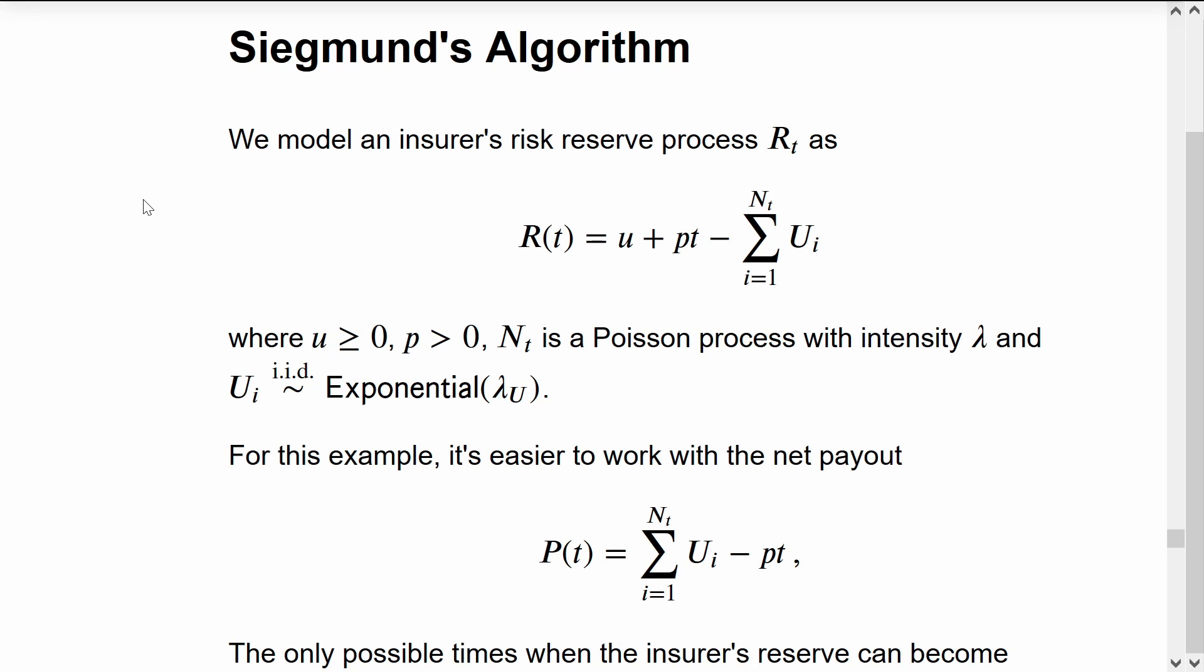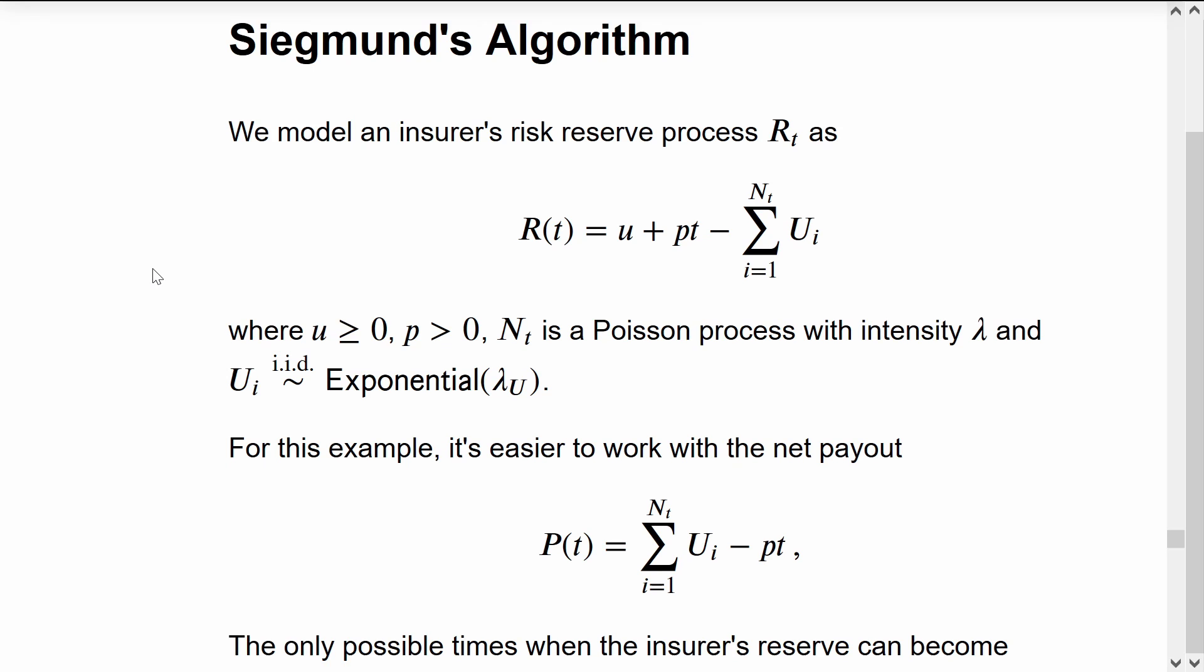The claim sizes are IID distributed. Here I've set them to be exponential to make life simple, although this will work for any light-tailed distribution.